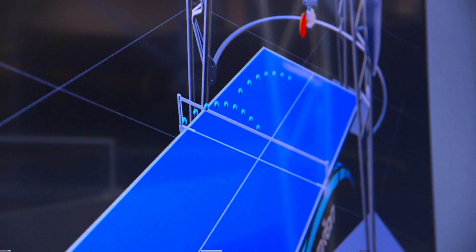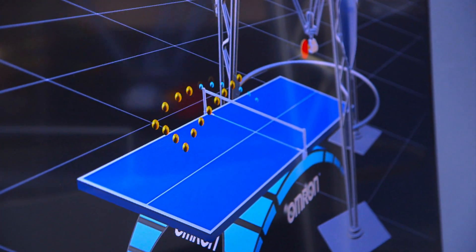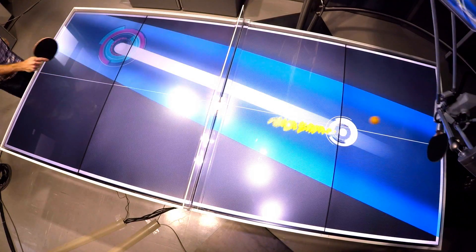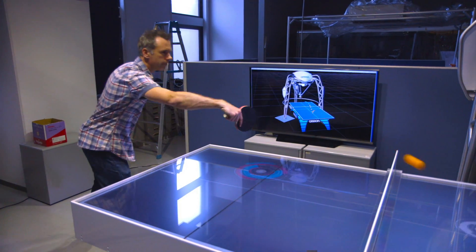The sensors above the table monitor the ball 80 times every second, which means not only can it predict where the bat needs to be, but it can also show you where its return shot is going to bounce.